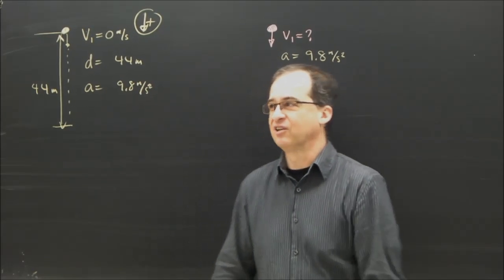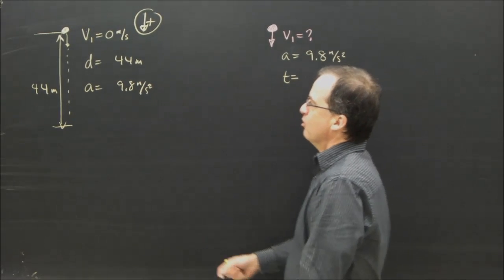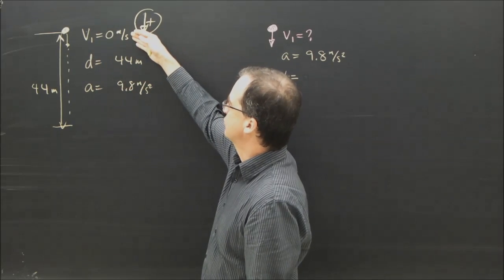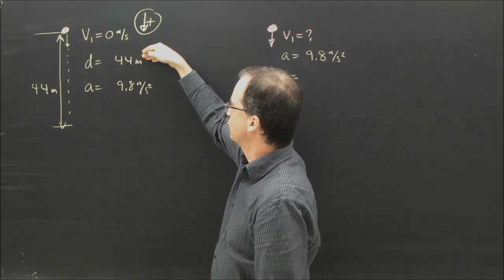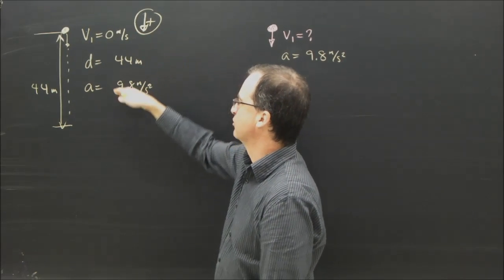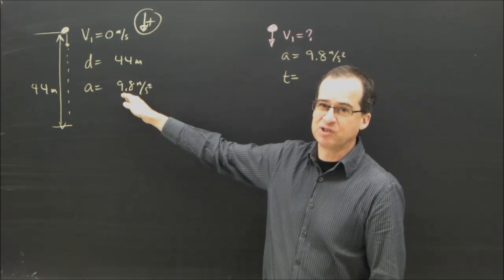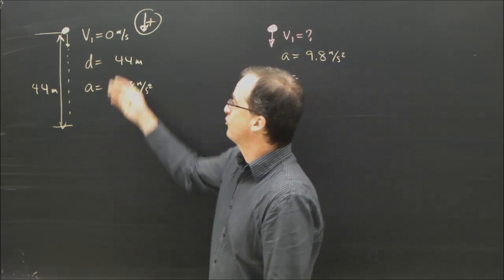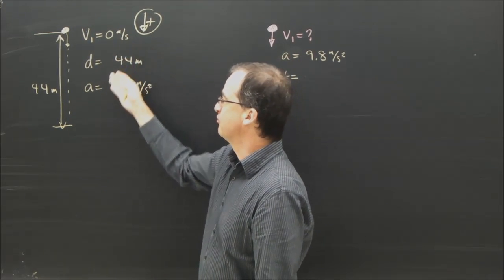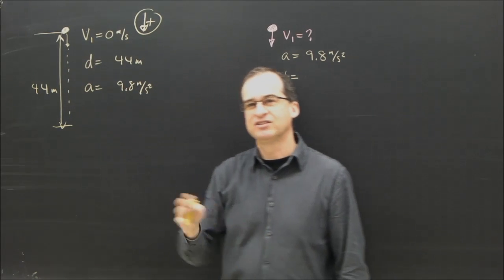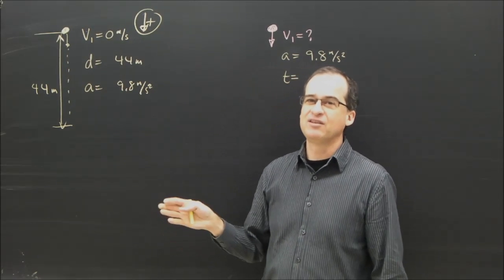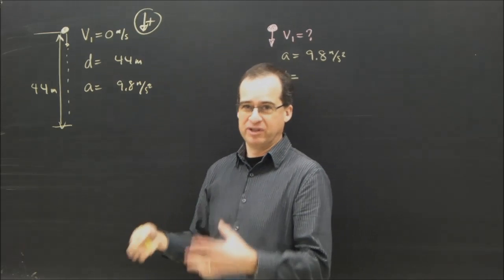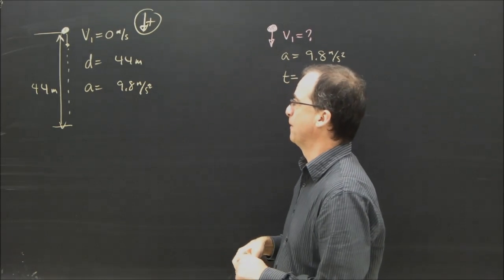Let's take a look at the question. What we got here is this is the first ball. It starts from rest, you drop it, it falls 44 meters, and the acceleration of any object on the earth is 9.8 meters per second squared. So I've got three pieces of information for this ball. I can solve for anything for that ball, because as long as you have three pieces of information with acceleration, you can solve for whatever you want.